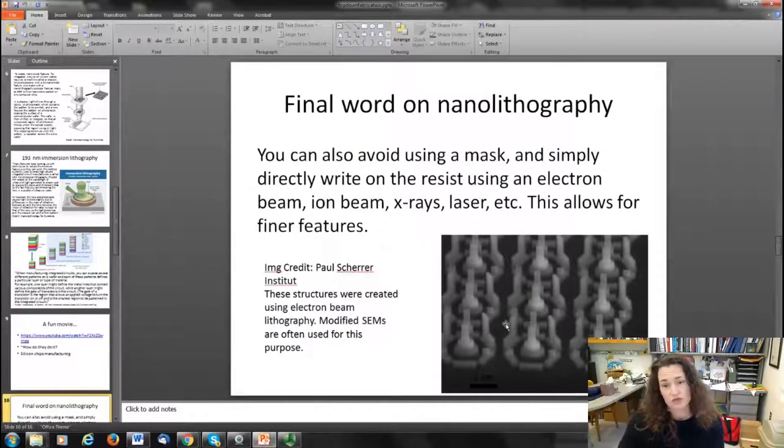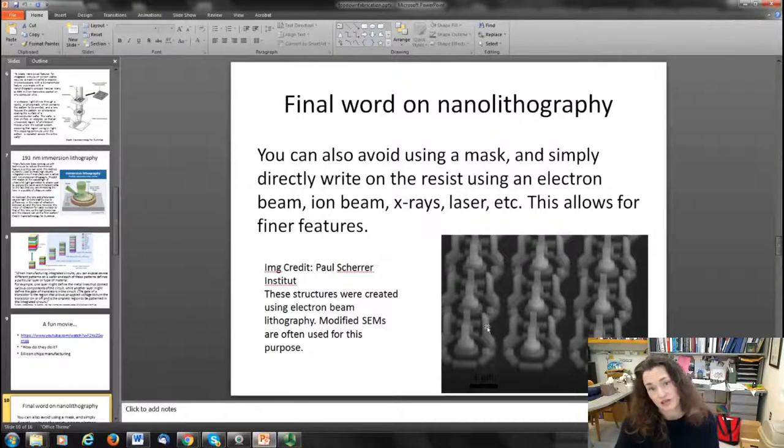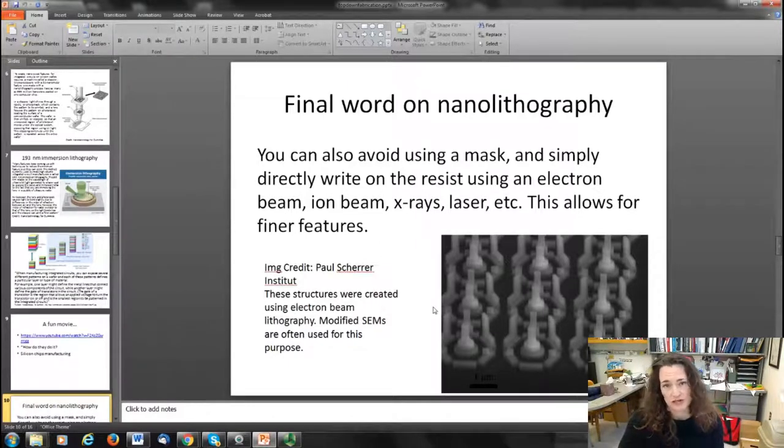Of course, you can also avoid using a mask and simply directly write onto the resist. Since the wavelength is a limiting factor on the resolution, you can get around that and have a smaller wavelength by using an electron beam, an ion beam, x-rays, and things like that. That allows for finer features.